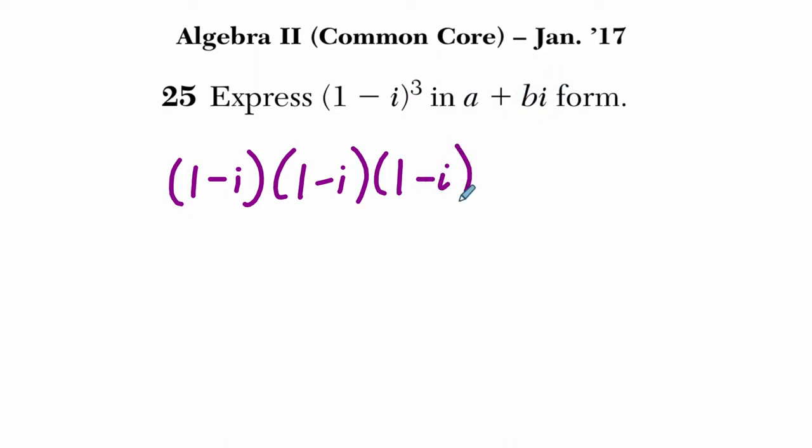Here we multiply three binomials and usually what I like to do is pair up any two of them. I'll take this pair right here, multiply those first, and then take that result and multiply that by 1 minus i, just to keep track of it.